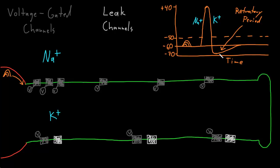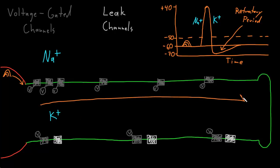One important effect of the refractory period is that action potentials travel from the trigger zone to the axon terminals and don't turn around and head back the other direction, because the membrane right behind the action potential is refractory — it can't be triggered to send the action potential back the other way.